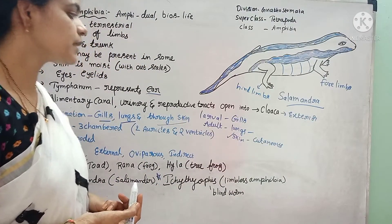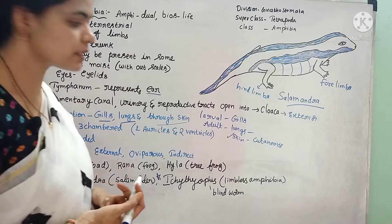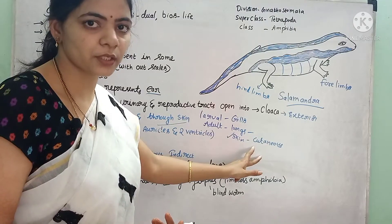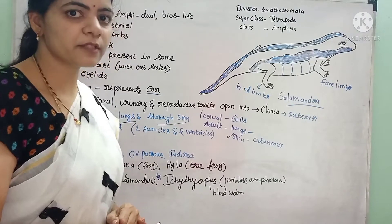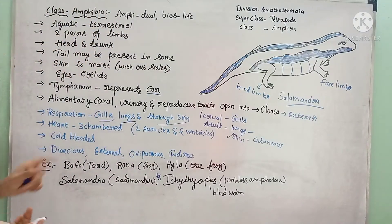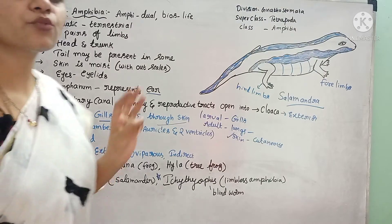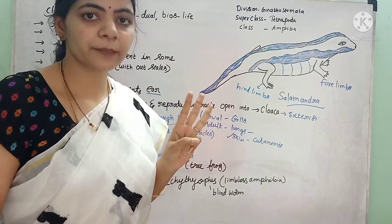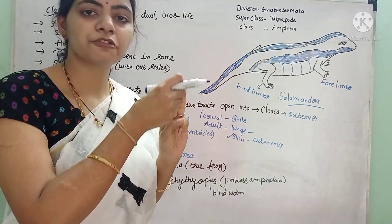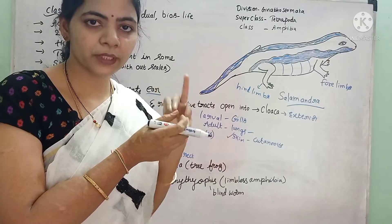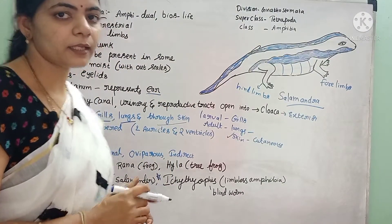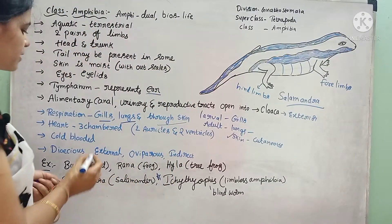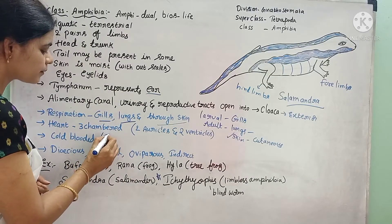Sometimes, if they don't get sufficient oxygen by means of cutaneous respiration, they will switch to pulmonary respiration and respire by means of the lungs. They consist of a three-chambered heart, which means they have two auricles and only one ventricle. These are cold-blooded animals, otherwise called poikilotherms.